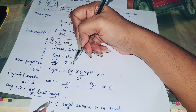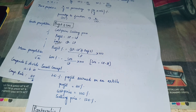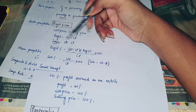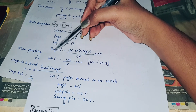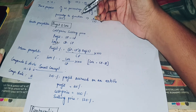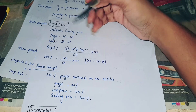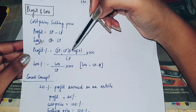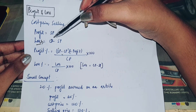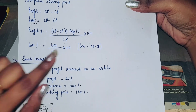Loss is equal to Cost Price minus Selling Price. Profit Percentage is nothing but Profit by CP into 100, where Profit equals SP minus CP. And Loss Percentage is nothing but Loss by CP into 100.